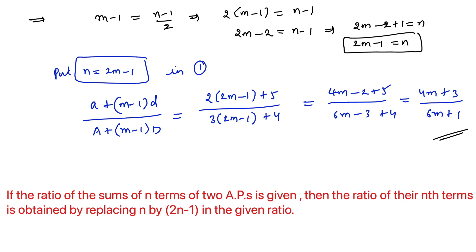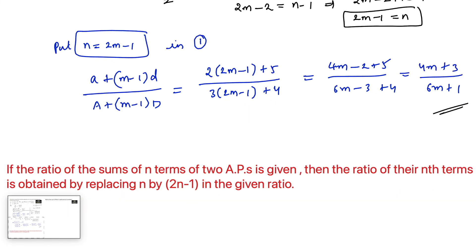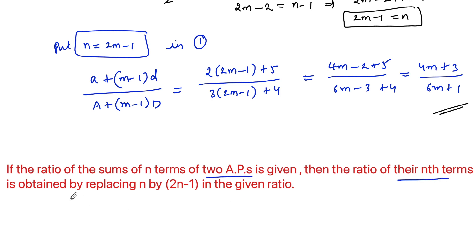This can also be obtained using a simple formula. If the ratio of the sum of n terms of two APs is given, then the ratio of their nth terms is obtained by replacing n by 2n minus 1. So here we replaced n as 2n minus 1. Similarly, for any problem, if the sum of n terms of two APs is given, then we can find the ratio of their nth terms by replacing n as 2n minus 1.